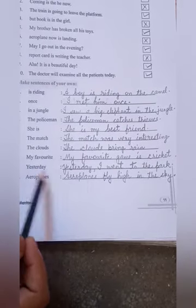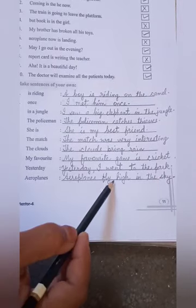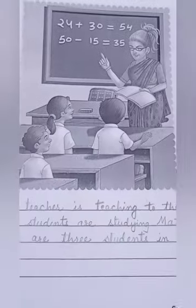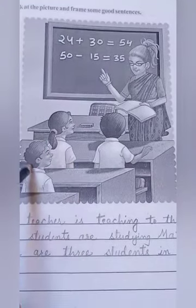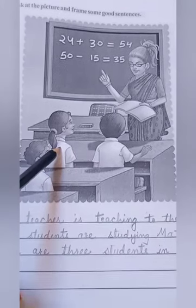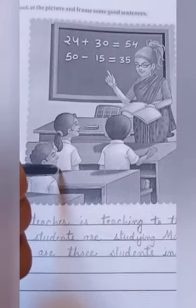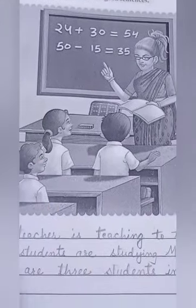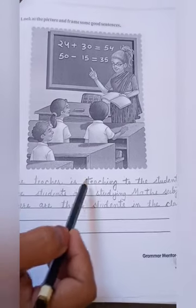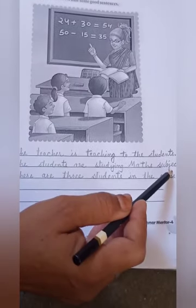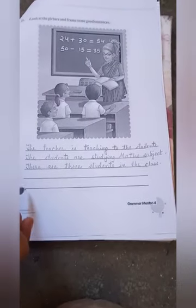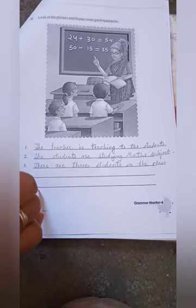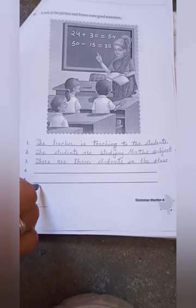Number 9 — 'Yesterday I went to the park.' Number 10 — 'Aeroplanes fly high in the sky.' Now turn the page and come to the next section D: look at the picture and frame some good sentences. By looking at this picture, you have to write four to five sentences. For example: 'The teacher is teaching the students,' 'The students are studying math,' and 'There are three students in the class.' Write the remaining two sentences on your own. By completing this, our lesson is done. You can revise again by watching this video. Goodbye!